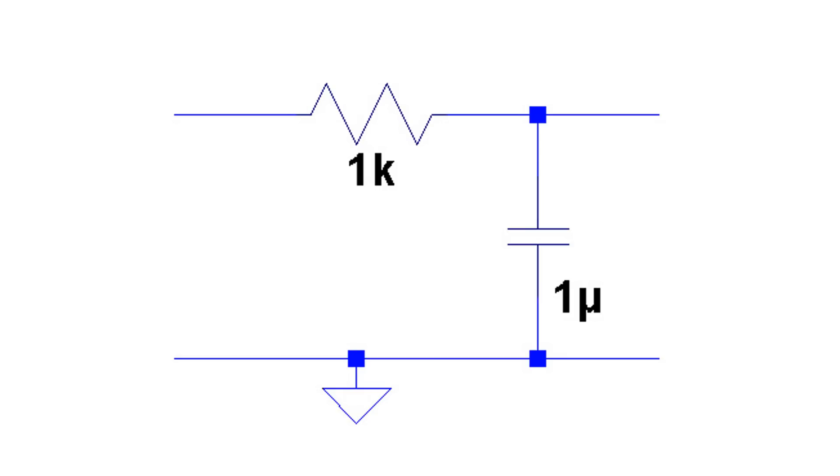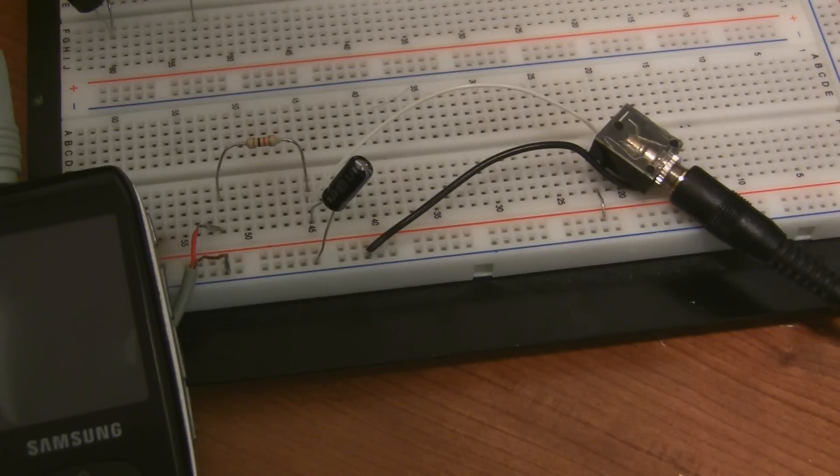So here's the 150 Hz low-pass filter as a schematic, and here it is on the breadboard. Now I'm going to play two sound clips.